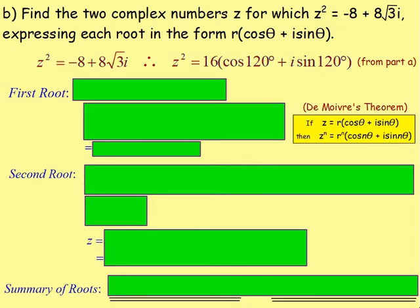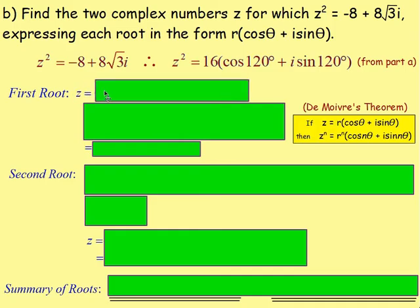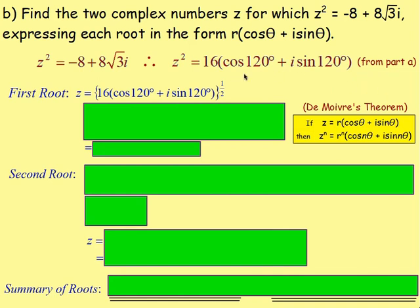This lesson is about the roots, so moving on to part B: find two complex numbers z for which z² = -8 + 8√3i, expressing each root in polar form. We know from part A that z² = 16(cos120 + i·sin120). To find the first root, we take this to the power of one half — taking the square root.